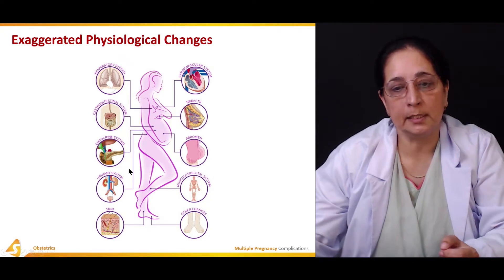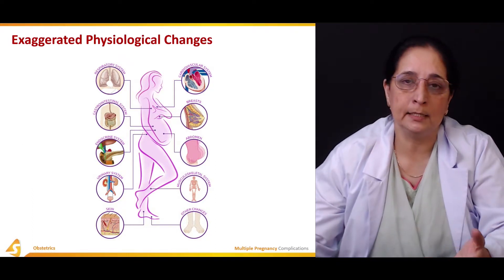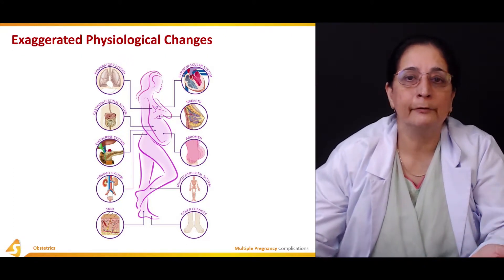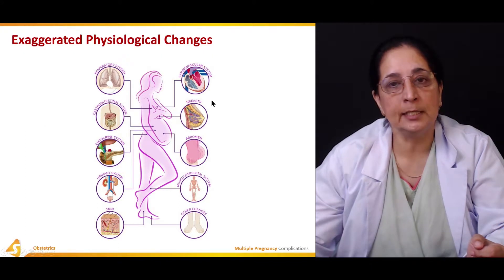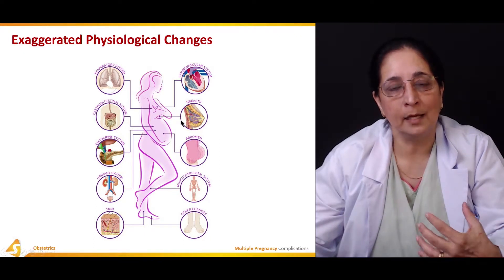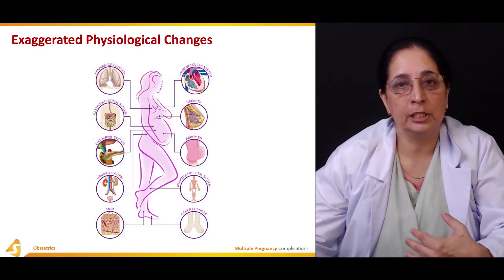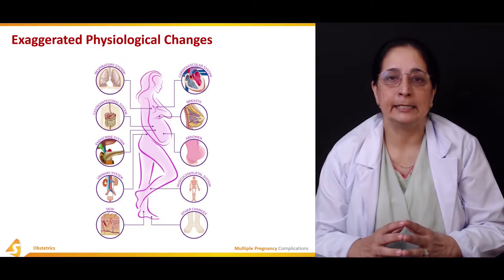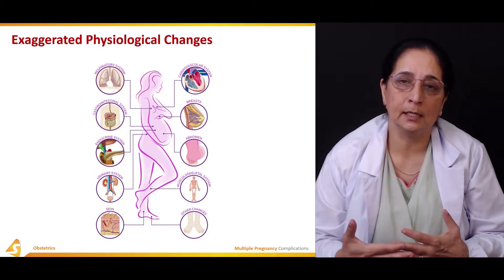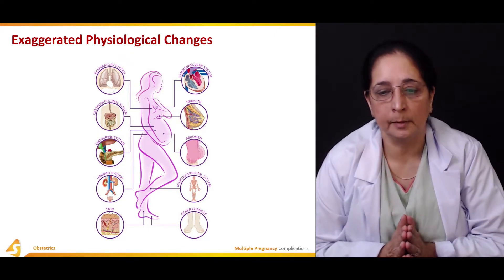Cardiovascular system changes include increased heart rate to boost blood supply, increased circulation, and fluid retention. Breast tissue becomes enlarged, feels fuller, and undergoes changes that ultimately can lead to lactation. The abdomen naturally increases in size more in twin pregnancy compared to single pregnancy.